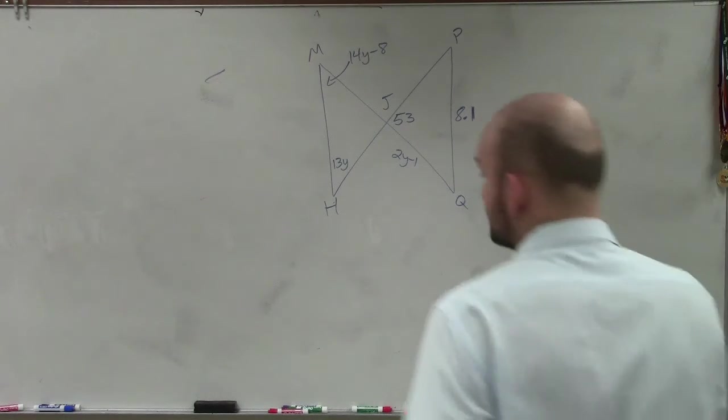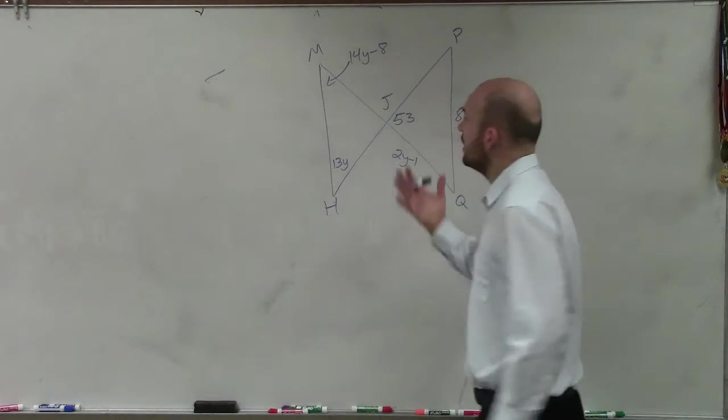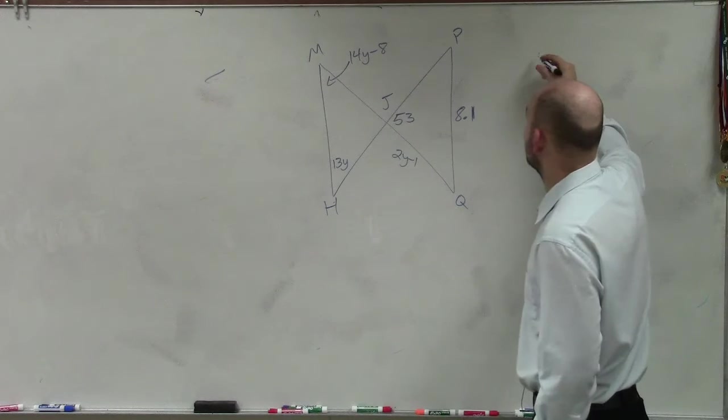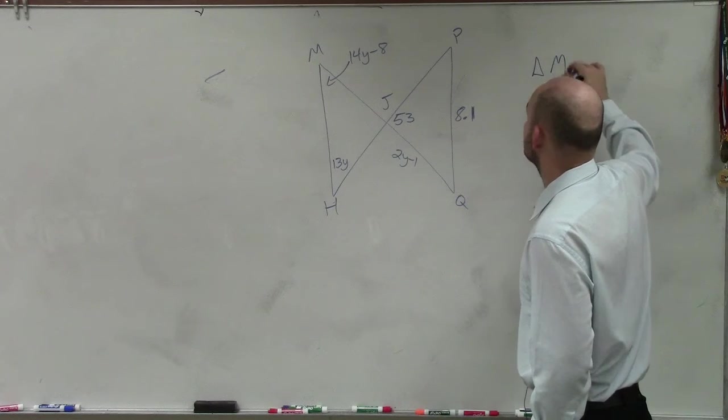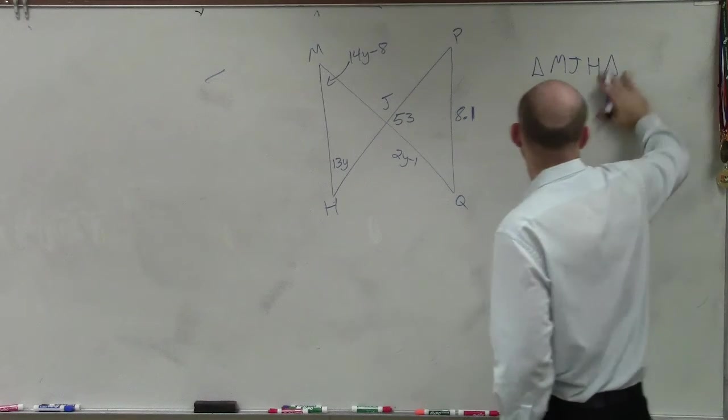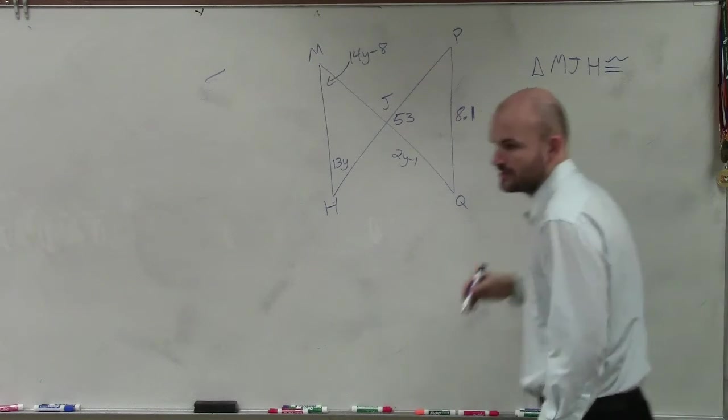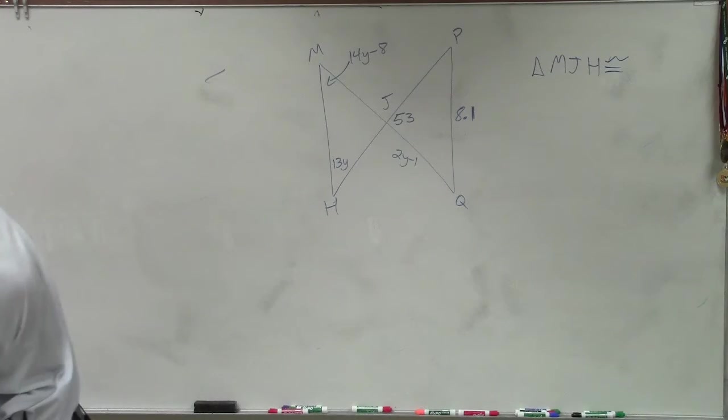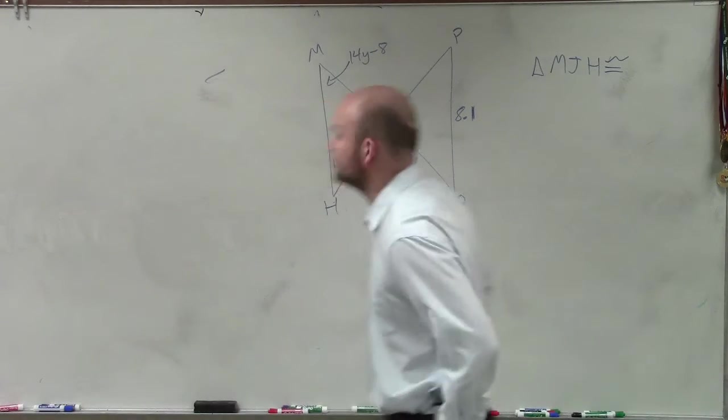So in this example, what we have is two congruent triangles. They said that triangle MJH is congruent... in which way? I don't know if I wrote this correctly. MJH is congruent to PQJ.